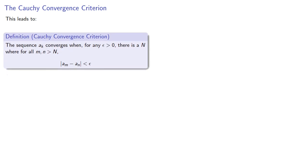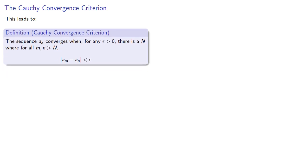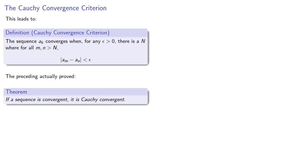And this leads to the Cauchy convergence criterion. The sequence converges if the difference between terms can be smaller than epsilon. Now the preceding actually proved that if a sequence is convergent, it is Cauchy convergent. We can also prove the converse, but you should do that.